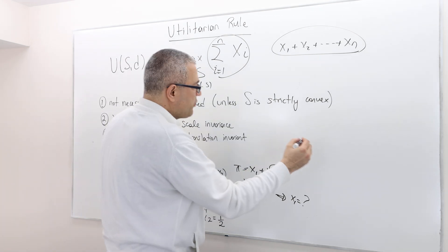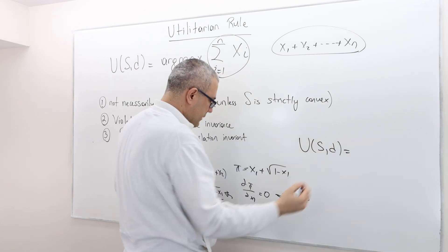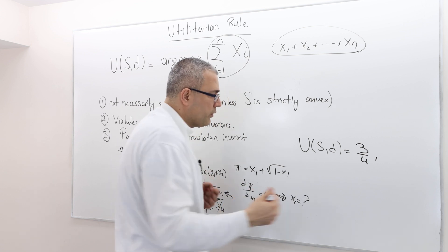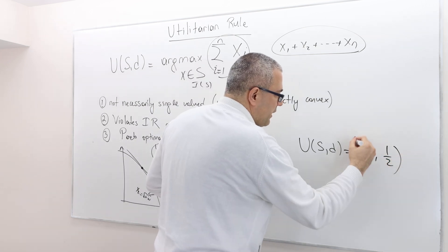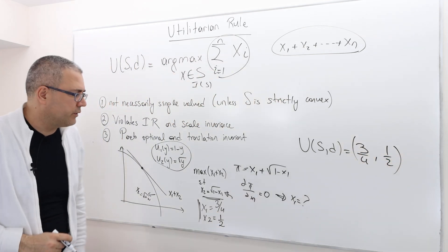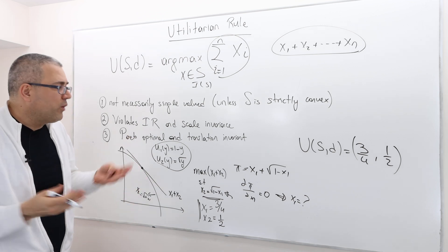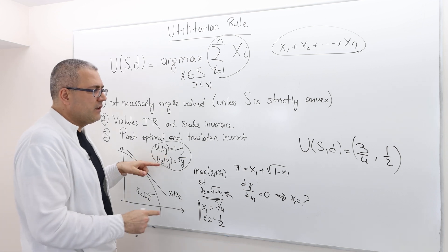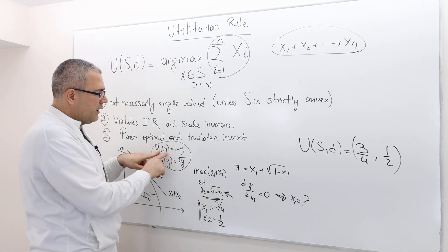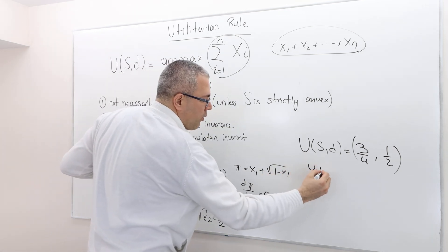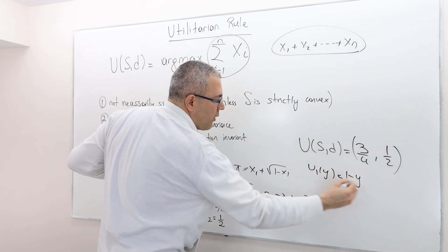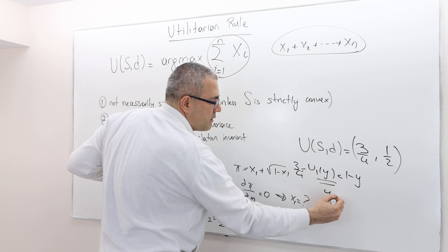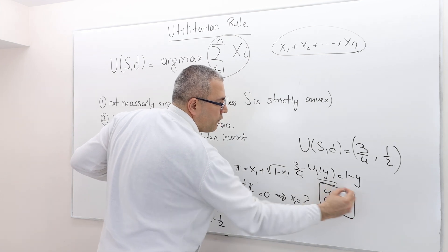The utilitarian solution for this problem is that player 1 gets 3/4 utility and player 2 gets 1/2 utility. What is the surplus that ensures they get this? Simple. For player 1, u1(y) = 1 - y. So u1(y) is going to be 3/4. That means the surplus y equals 1/4.